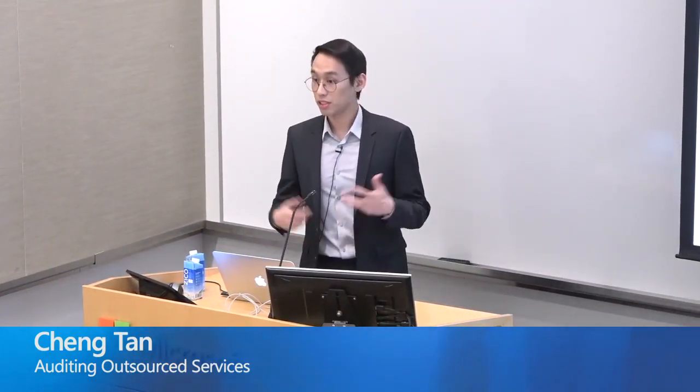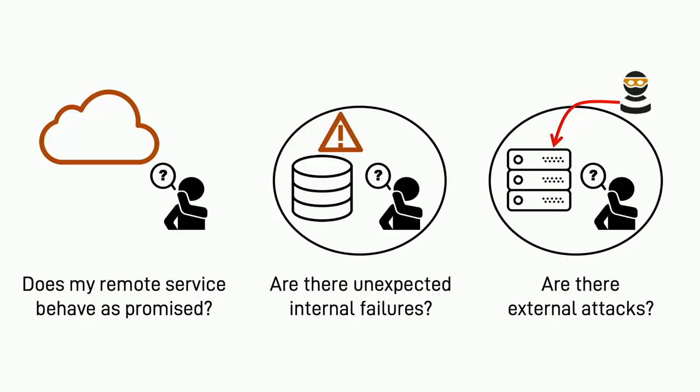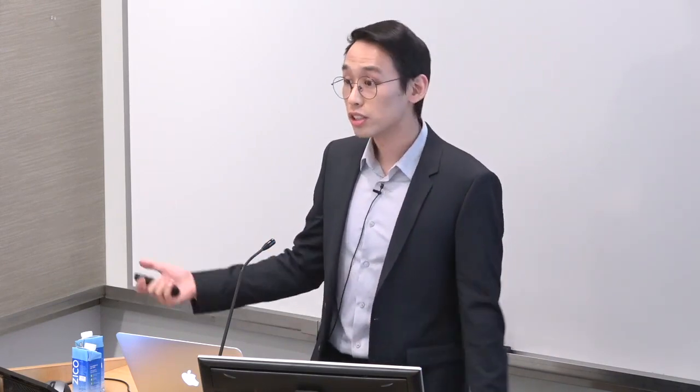Thank you for the introduction. My research is in systems and security, and I also work a bit on network systems and mobile systems. In today's talk, I'll mainly focus on the question of how to verify the execution of an application running on untrusted servers. This is one of the fundamental questions in system security. Answering this question could enable users to recognize whether their remote service behaves as expected or as promised. It also can help people understand whether there are internal unexpected failures or external attacks in their local services.